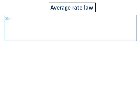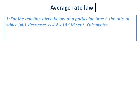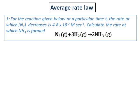Now we will do the first question on average rate law. For the reaction given below, at a particular time T, the rate at which nitrogen decreases is 4.8 times 10 to the power of negative 3 molar per second. Calculate the rate at which ammonia is formed. The equation given is nitrogen plus 3 hydrogen giving you 2 ammonia.